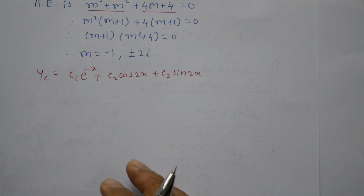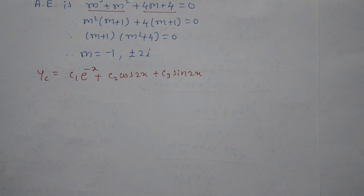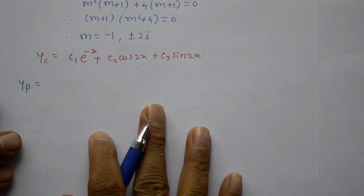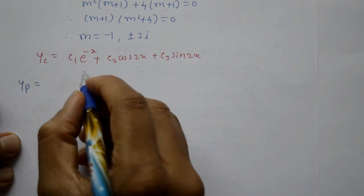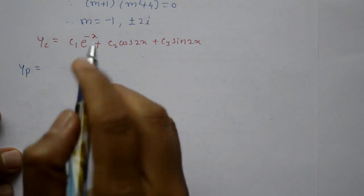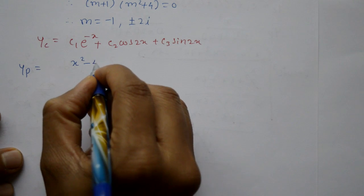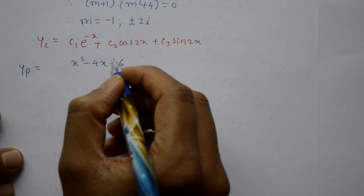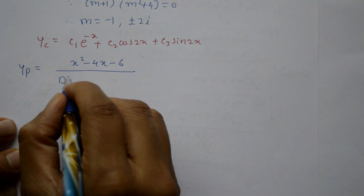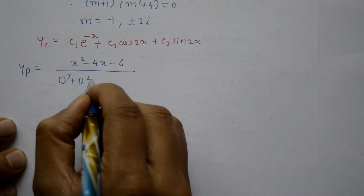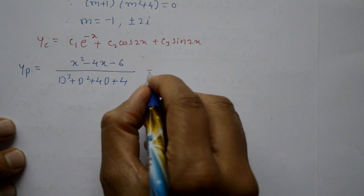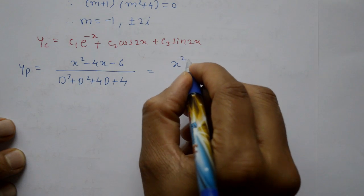Now find the particular integral. Yp = φ(x) / f(D) = (x² - 4x - 6) / (D³ + D² + 4D + 4). Arrange denominator in ascending order: 4 + 4D + D² + D³. No change needed to numerator.